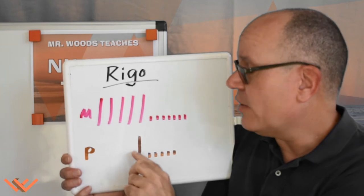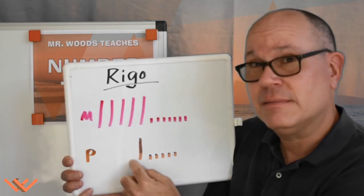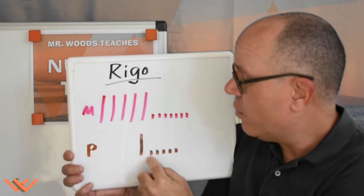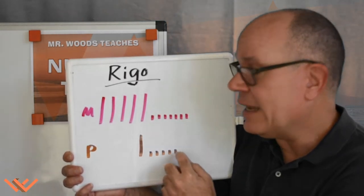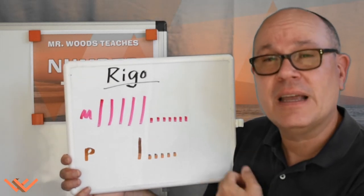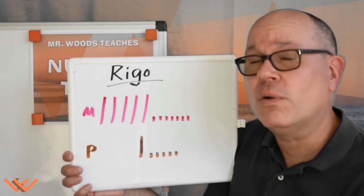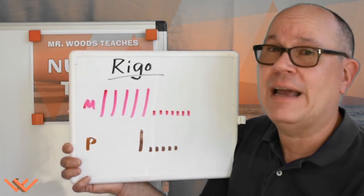Then he saw 15 palm trees. So it's 10, and 1, 2, 3, 4, 5 ones, plus 5 ones is 15. How do we add this together to find out how many trees in total Rigo saw at the nursery?